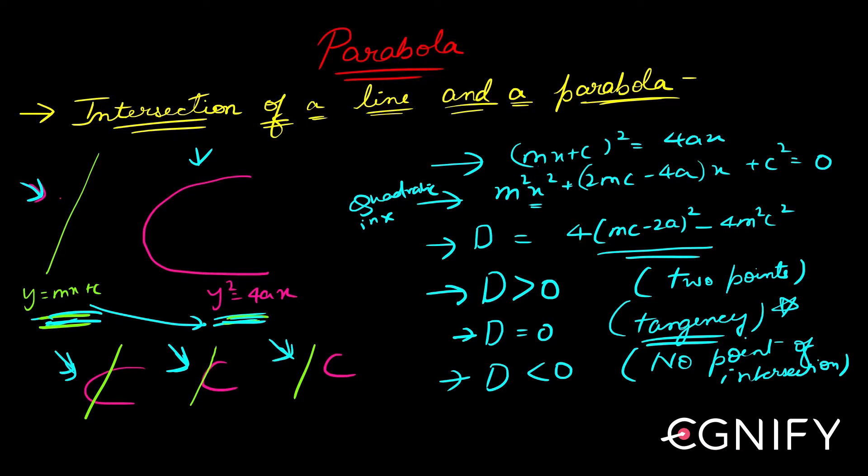So in fact, if you impose the condition, then this is equivalent to a squared greater than m squared c squared. That is the condition. And this one is a squared equals m squared c squared, and this is a squared less than m squared c squared.